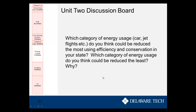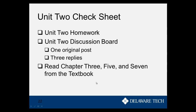For your Unit 2 Discussion Board, answer and post the following question: which category of energy use — car, jet flights, etc. — do you think could be reduced the most using efficiency and conservation in your state, and which could be reduced the least? Really dig into the 'why.' To complete Unit 2: do the homework with questions you've seen throughout this presentation, complete the discussion board with one original post and three replies, and read chapters 3, 5, and 7 from the textbook.